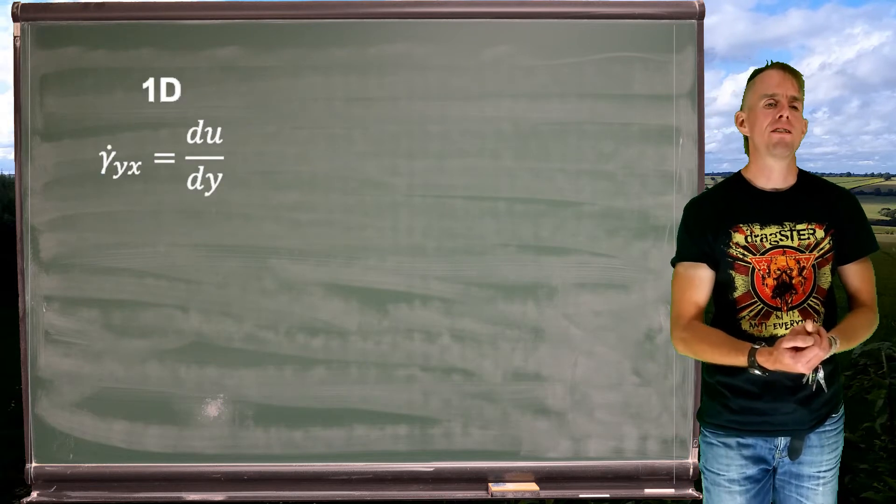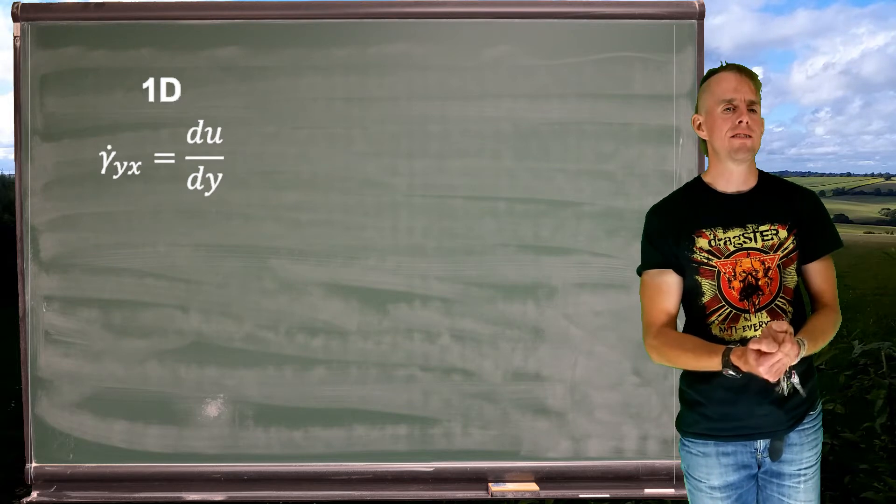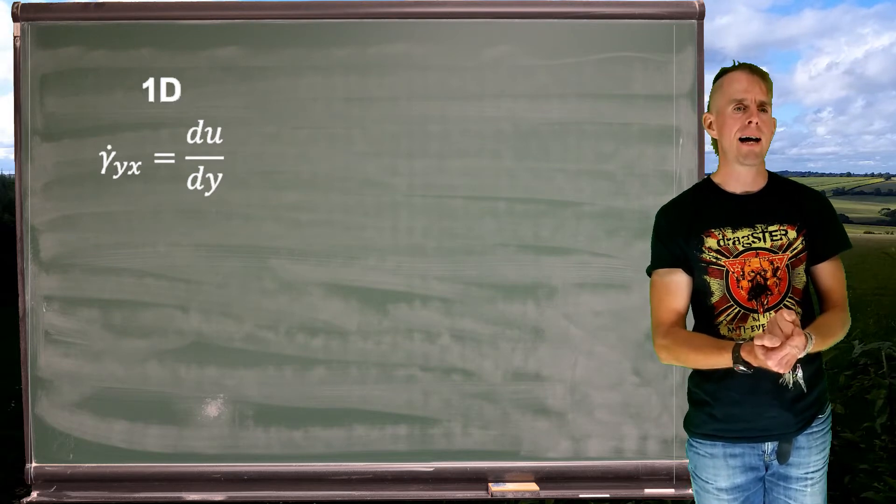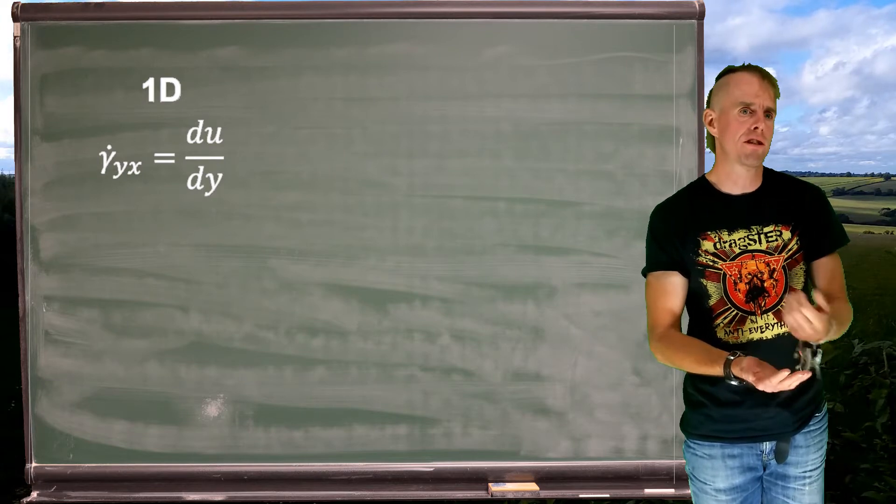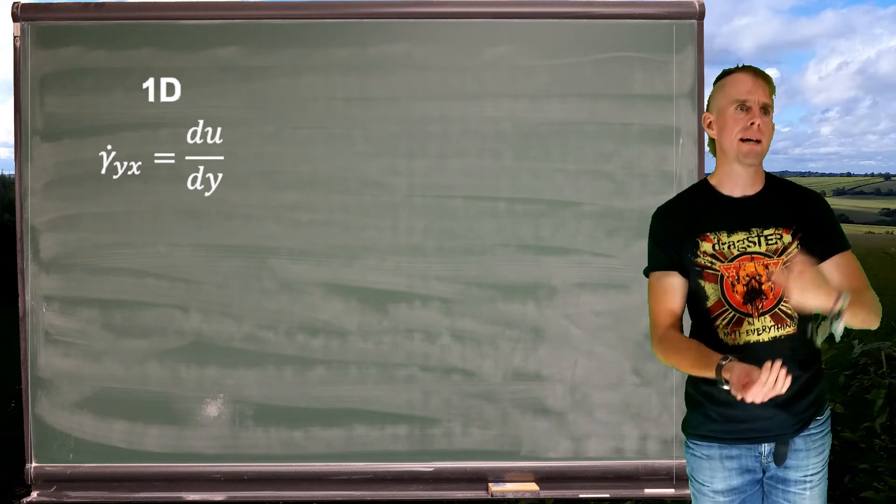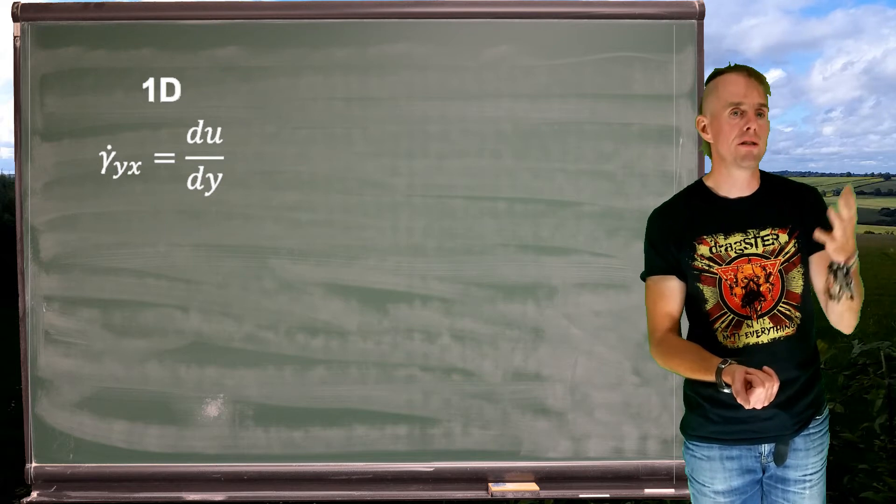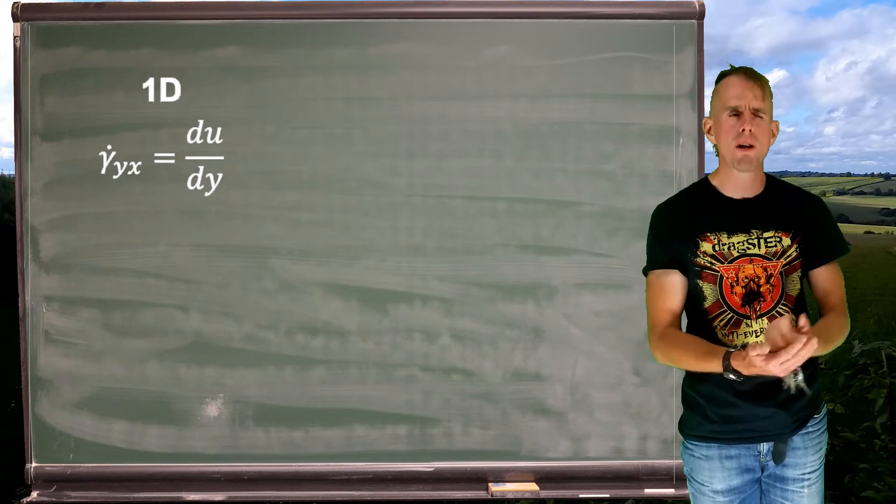So let's look back in 1D. There we have gamma dot yx is du by dy, and that is effectively information about velocity gradients. And we can relate that to the state of stress tau, tau equals mu du dy. So that's 1D.